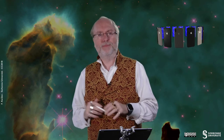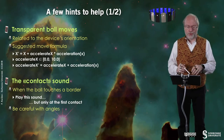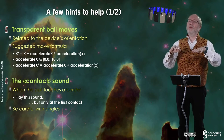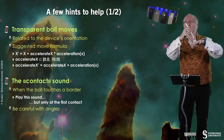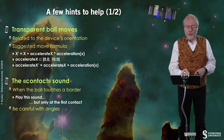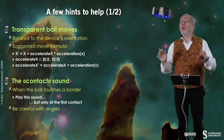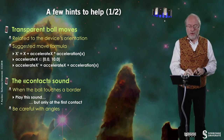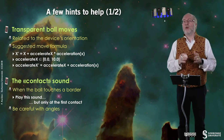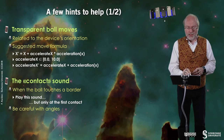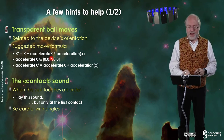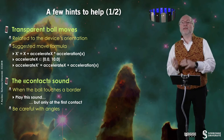If you need some help: the transparent ball moves are related to the device orientation as you noticed. So if I tilt the device this way, the ball should go there. I suggest a movement formula — you can use another one — which is to define the next position of x, called x prime, from the position of x and an acceleration that is a variable with a value between 1 and 10.